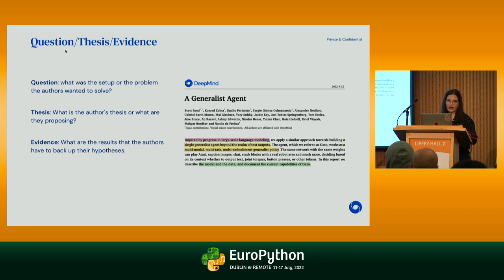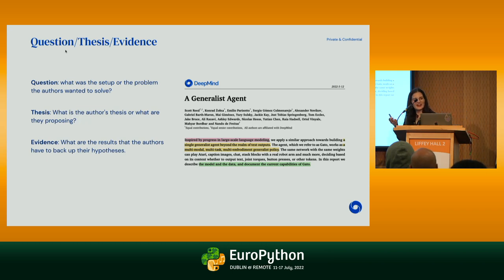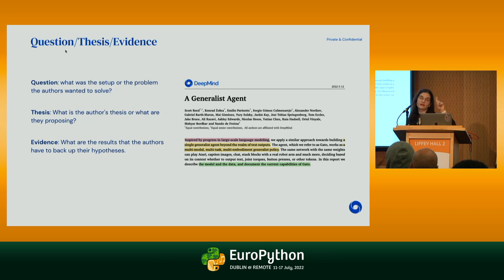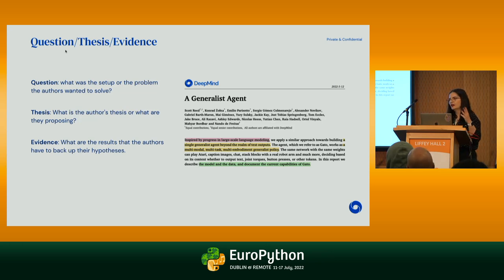A brief note on how to highlight papers. Since I do these three phases, and sometimes I read a paper but won't implement it — or maybe I'll take almost a year before reading it again — I use a semaphore system: I highlight in red the hypothesis, the problem that the authors are trying to solve. In yellow, the methodology that the authors are proposing. And in green, I highlight the evidence that backs up the hypothesis.